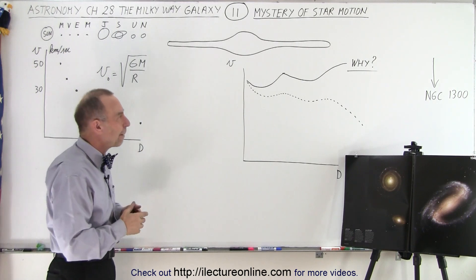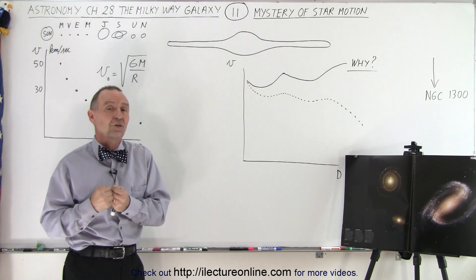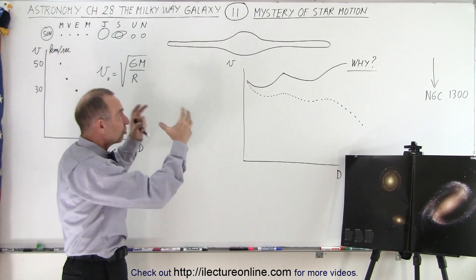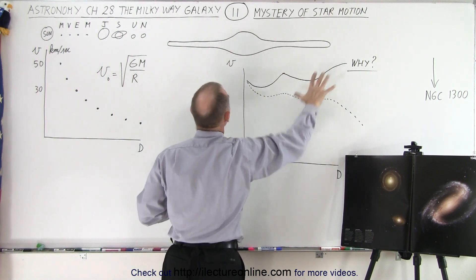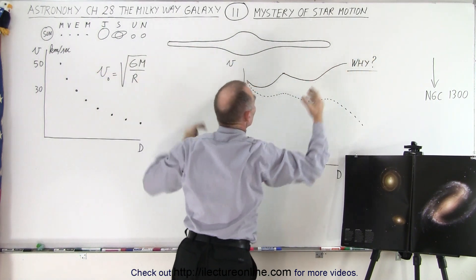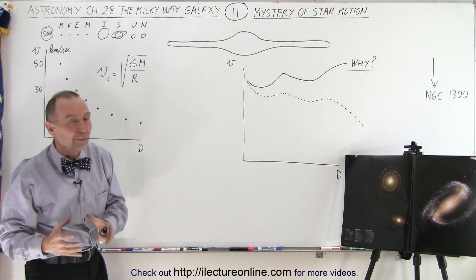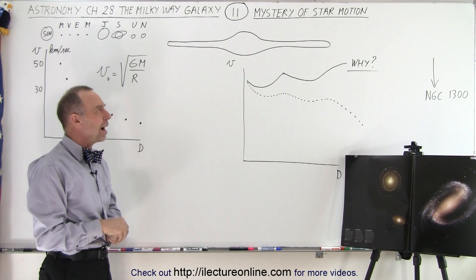So something is causing that to happen. Apparently, according to the laws of physics, there's only one answer to that. There must be some additional mass contained in the galaxy, perhaps within the region of the galaxy, within that spherical region, and perhaps beyond that spherical region. There must be some additional mass that we can't see.